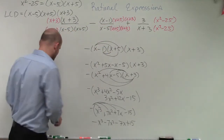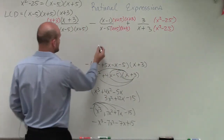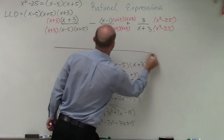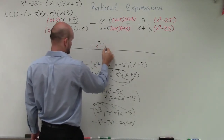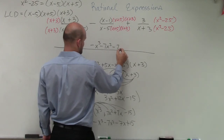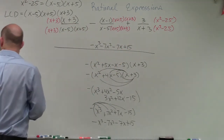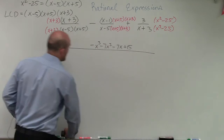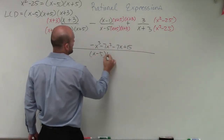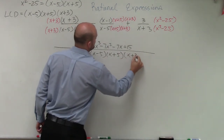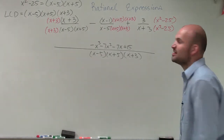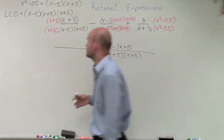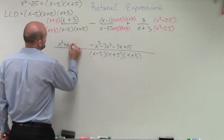You can see how much extra work that took. So now I can rewrite my numerator: I know that over here I'm going to have negative x cubed minus 7x squared minus 7x plus 15. Our common denominator is x minus 5 times x plus 5 times x plus 3. Now let's do the easier math. Here we have two identical binomials, which produces a perfect square trinomial: x squared plus 6x plus 9.